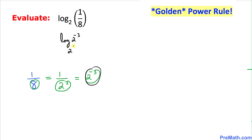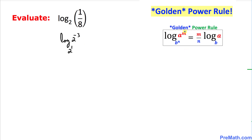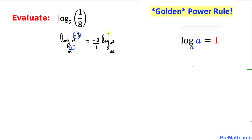We note that 2 is the same as 2 power 1. Applying the golden power rule — exponents m and n go to the front as m divided by n — our exponents are negative 3 and 1. We write negative 3 over 1 times log of 2 with base 2. Since the argument and base are both 2, that equals 1. Negative 3 over 1 is simply negative 3, so our answer is negative 3.